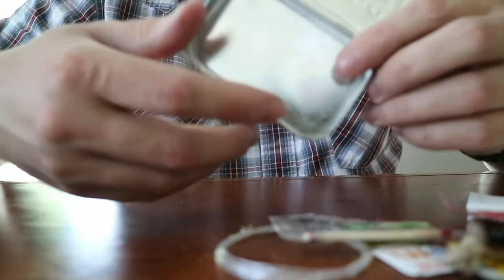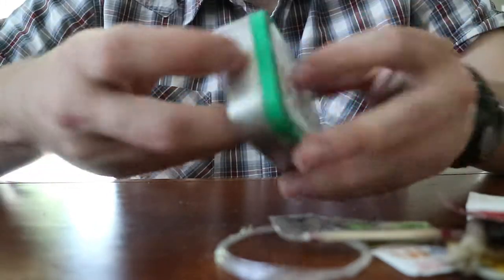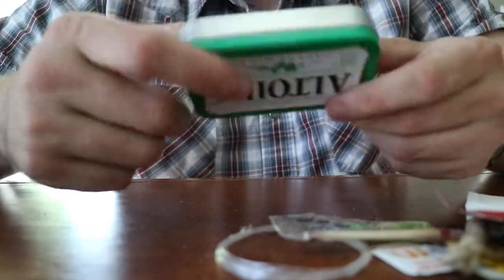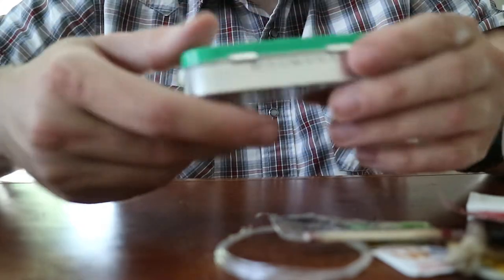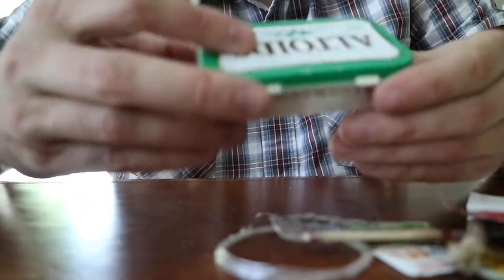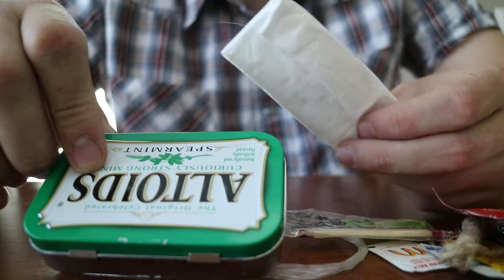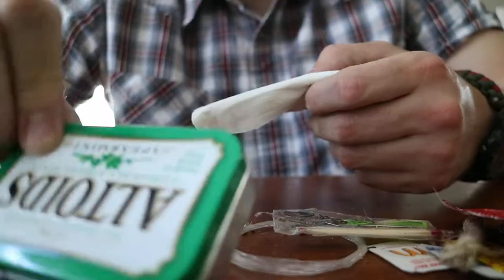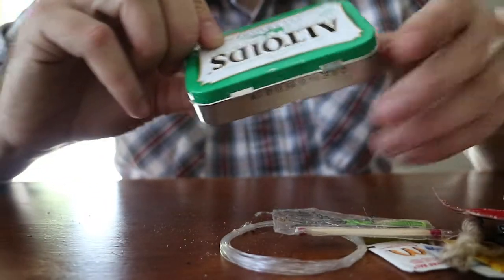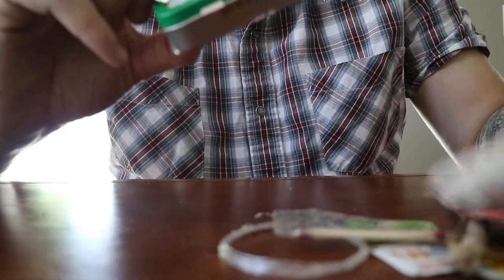And then of course, the tin itself can be used to keep all the items in. You can boil water in it. Like I said, you can take the Kleenex, put it inside the tin, let it sit in a fire for a while, and it will turn that into a very nice fire starter too.